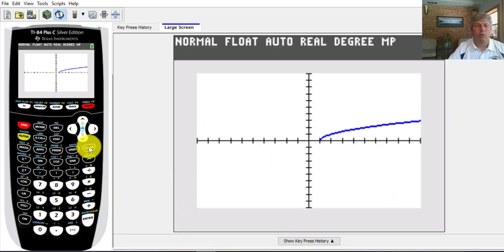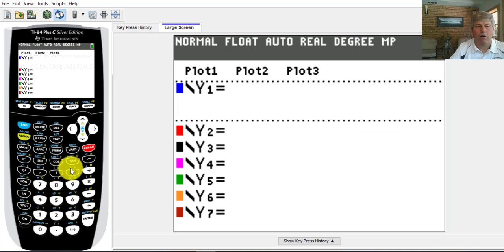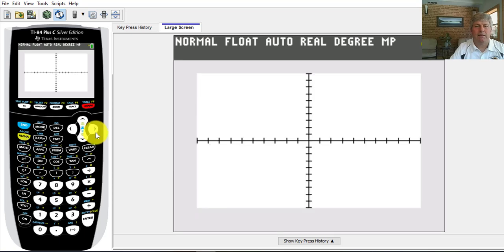So we're going to go to our graphing calculator. We will input our function of x cubed minus 3x. So x to the third power, x cubed minus 3x is our function. I'm going to graph that, graph that in the standard window.